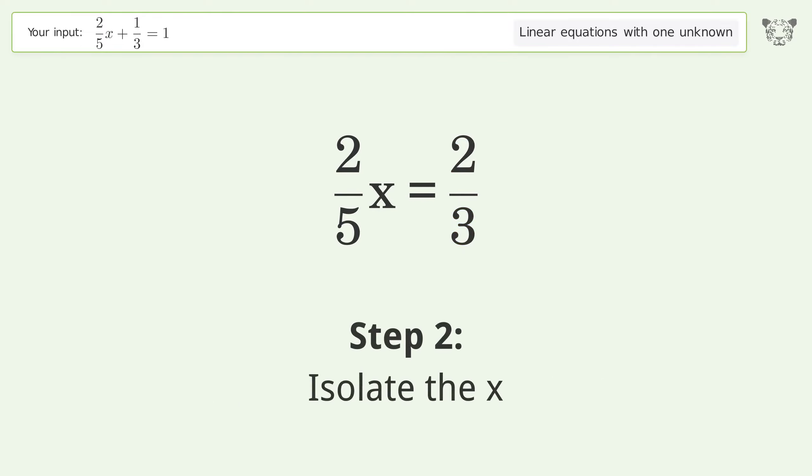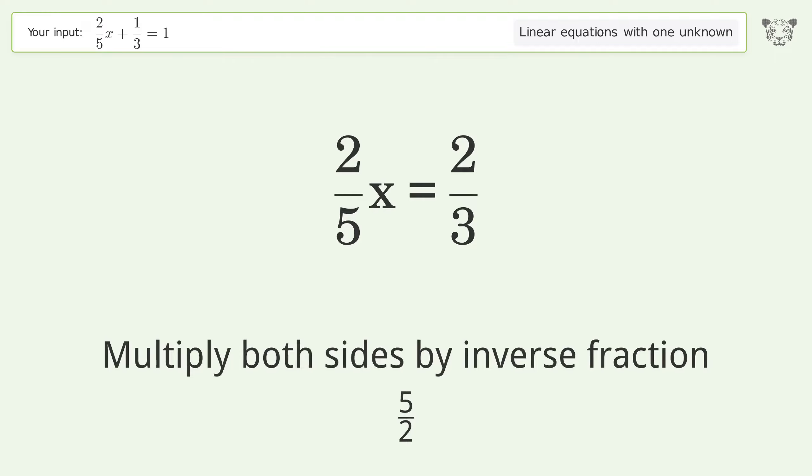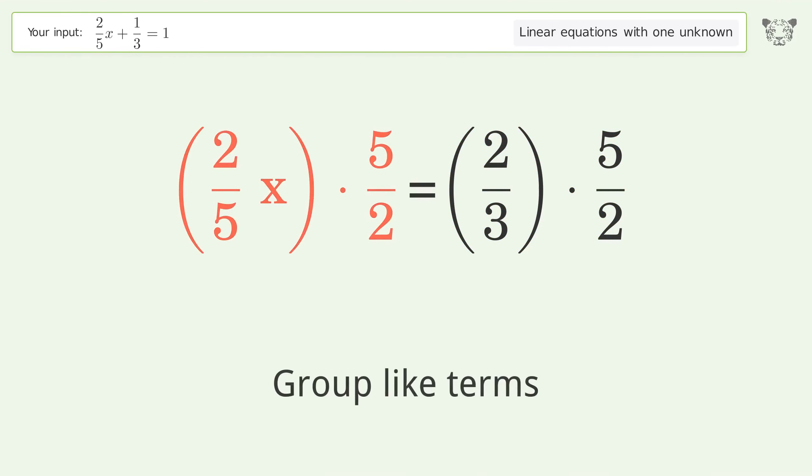Isolate the x. Multiply both sides by inverse fraction 5 over 2. Group like terms.